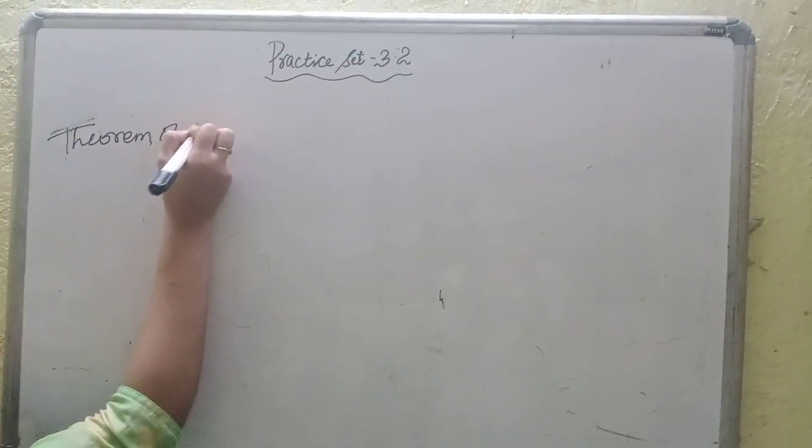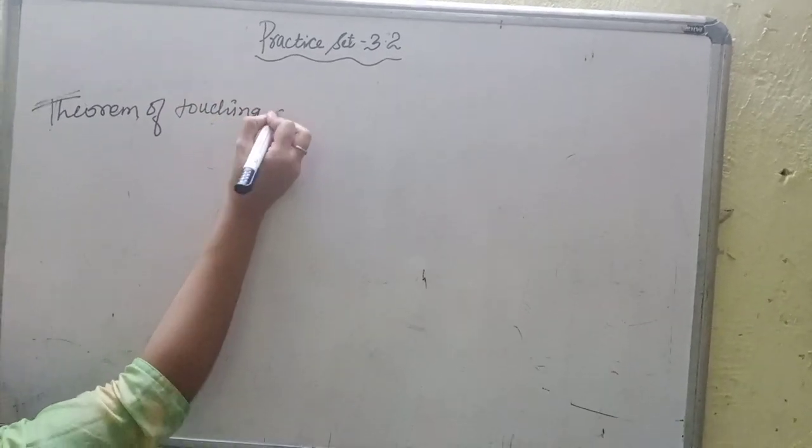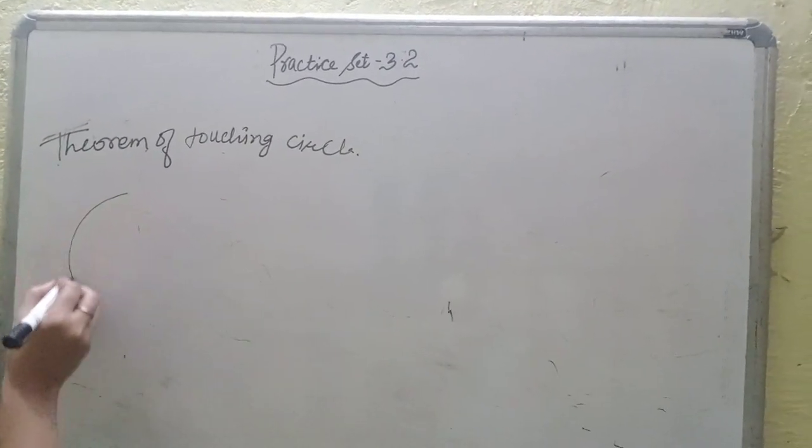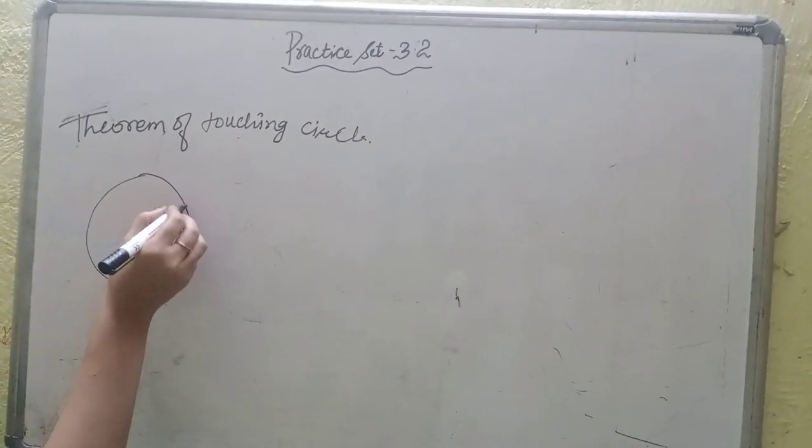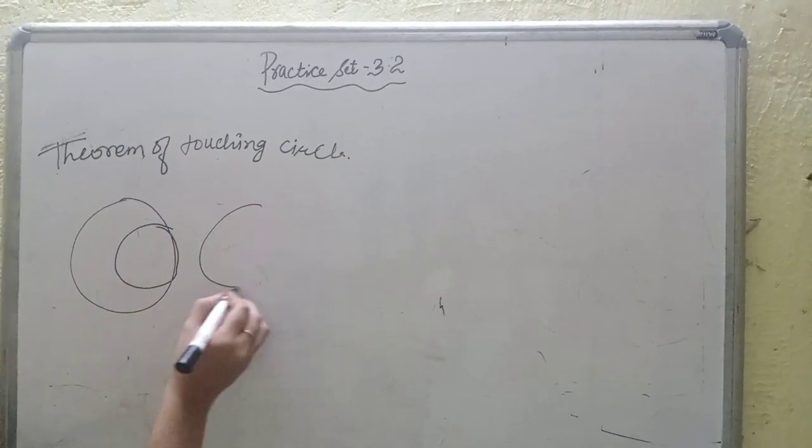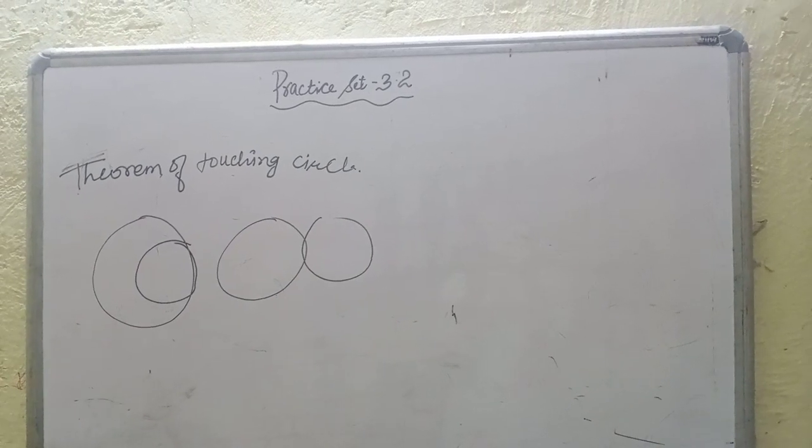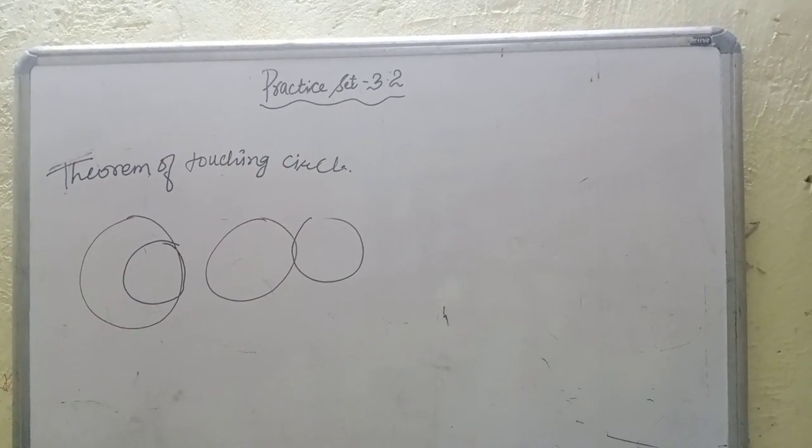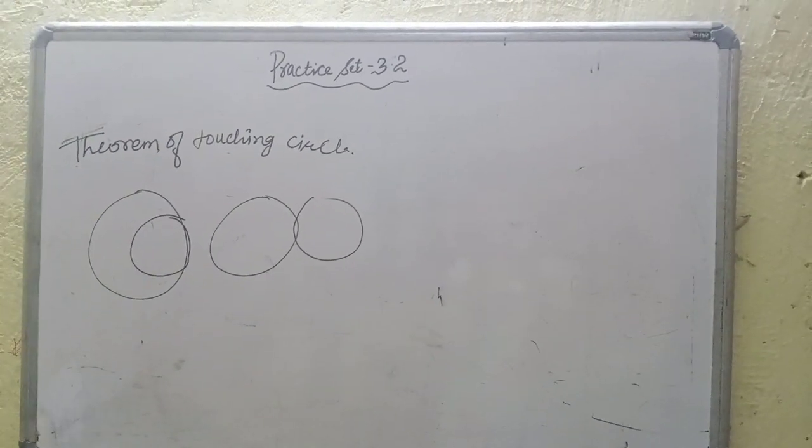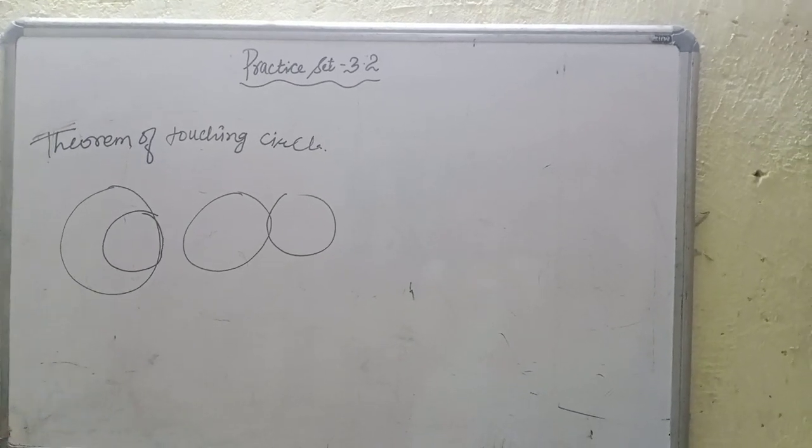Theorem of Touching Circle. One is internally touching circle, which is internal touch, and one is externally touching circle. These two circle theorems we have to learn. If two circles touch each other, their point of contact lies on the line joining the center.